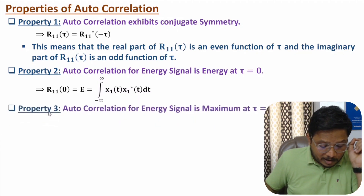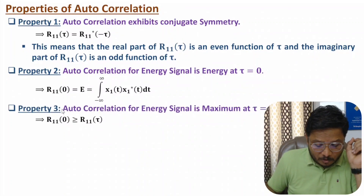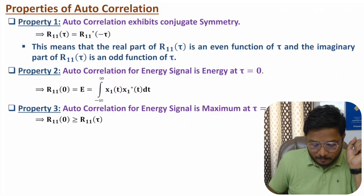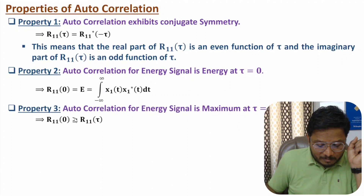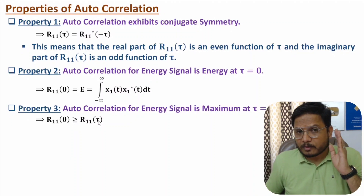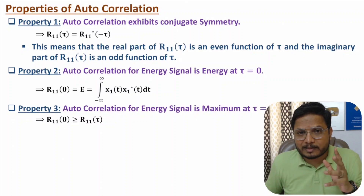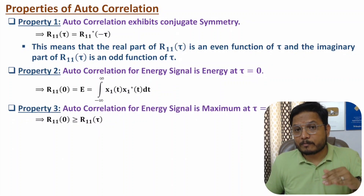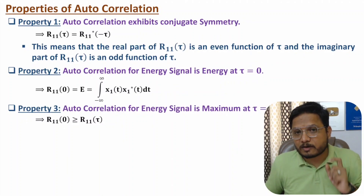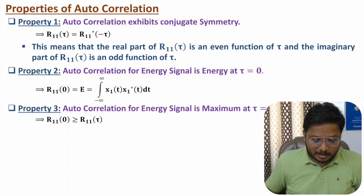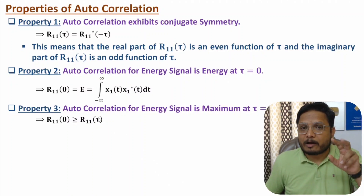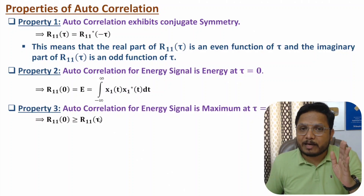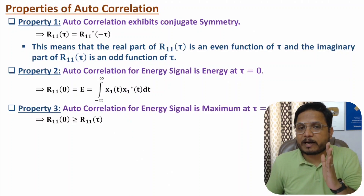The third property is: auto correlation for an energy signal is maximum at τ equals zero. So R₁₁(0) is greater than or equal to R₁₁(τ) for all τ. One should know that the auto correlation of an energy signal has its maximum value at τ equals zero, and as τ increases, the auto correlation decays.